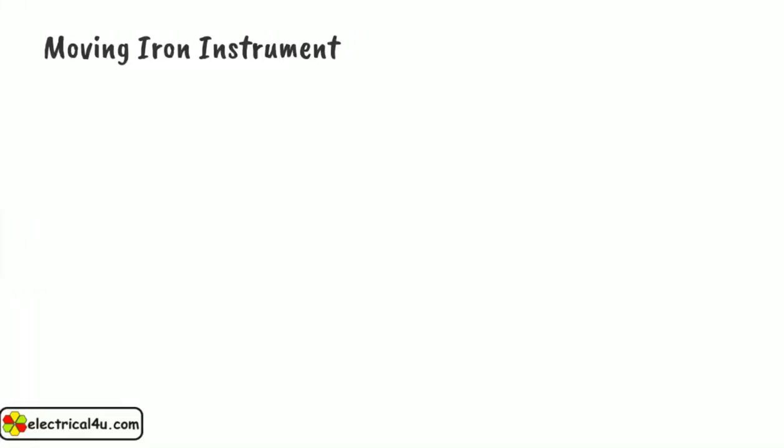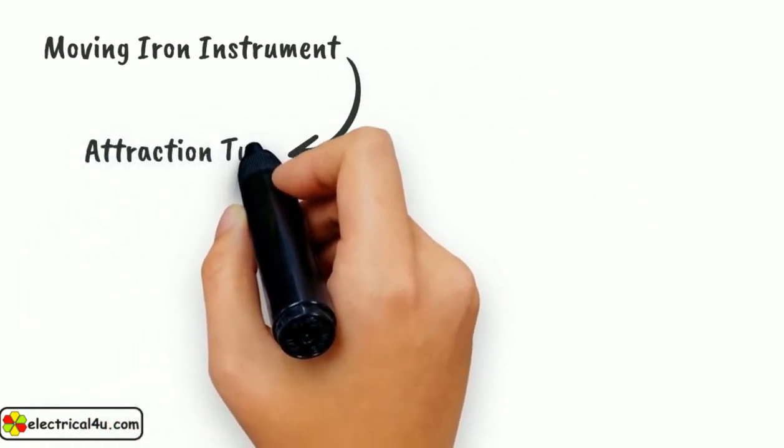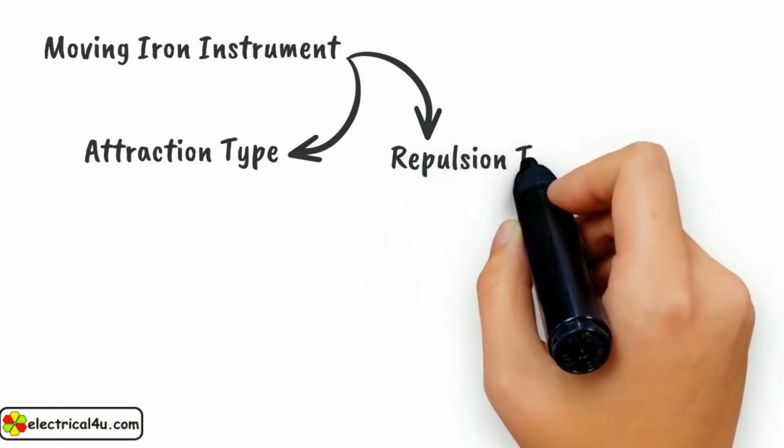The moving iron instrument is mainly classified as two types. One is the attraction type instrument and the other is the repulsion type instrument.